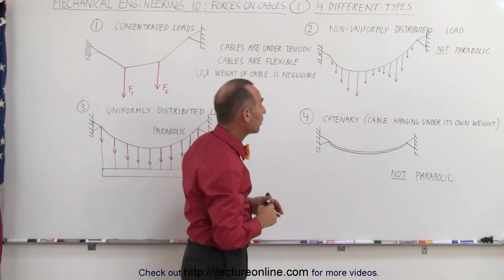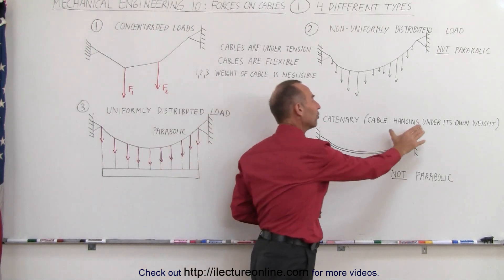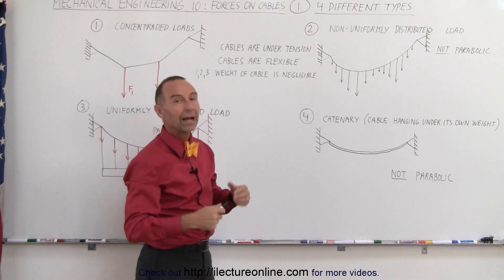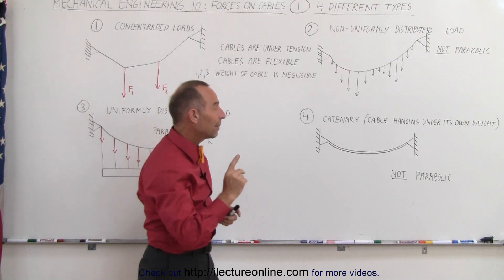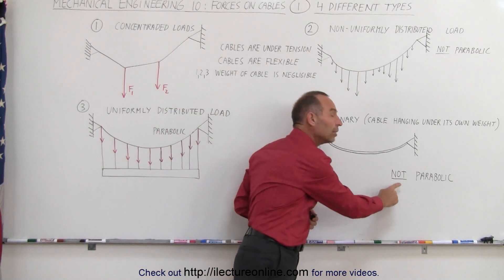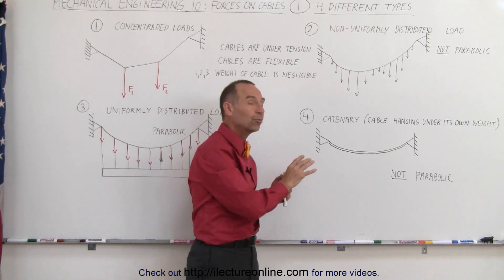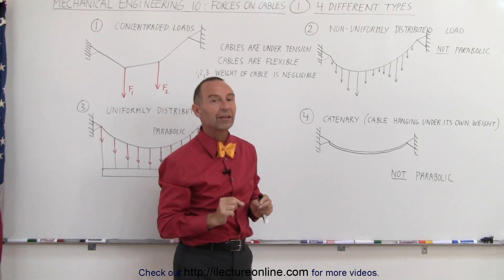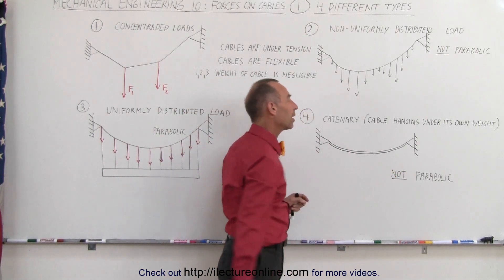And finally we have what we call a catenary, that is the situation where the cable hangs under its own weight, such as telephone cables or high power voltage cables. They simply hang under their own weight and because of that the shape is also not parabolic. We'll see later that we can probably approximate in certain situations parabolic shapes and the answers will not be that different, but it's important that we learn how to deal with it in the non-parabolic case as well.